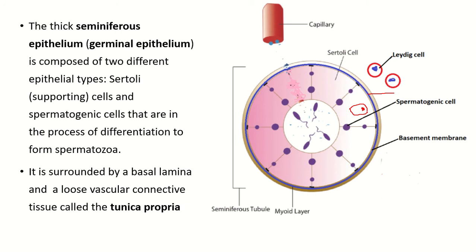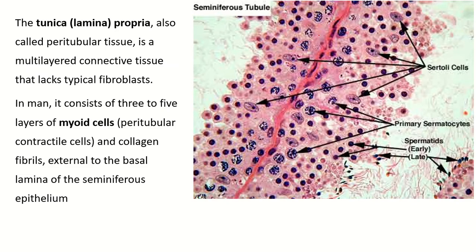Outside the seminiferous tubule there is a smooth connective tissue layer, and outside this connective tissue layer another cell is present — the Leydig cell, which secretes testosterone. This testosterone acts on the Sertoli cell and influences its function. This testosterone also influences the development of the spermatogenic cell.